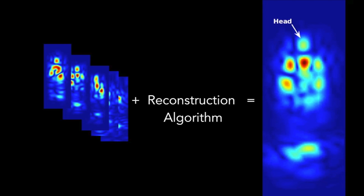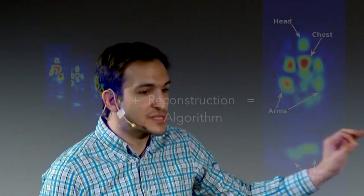So over here, we see the background in navy blue and different body parts in red, orange, yellow. So here, we see the person's head, chest, arms, and feet. And all of this is done using this device that is on the other side of the wall.